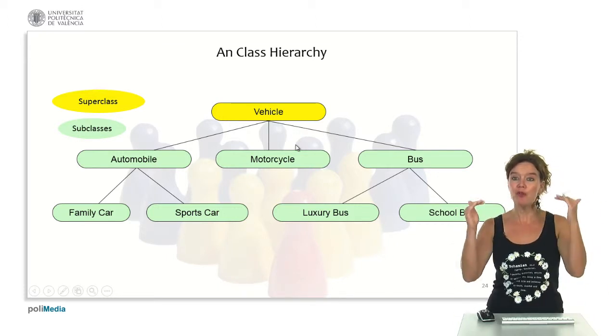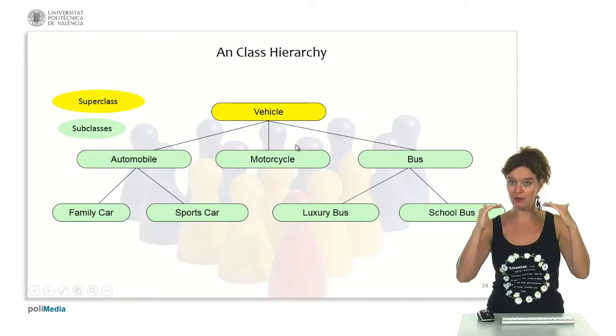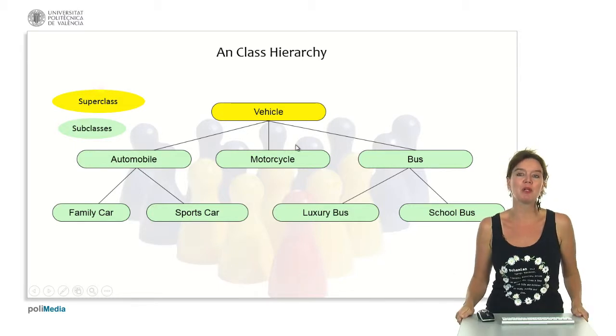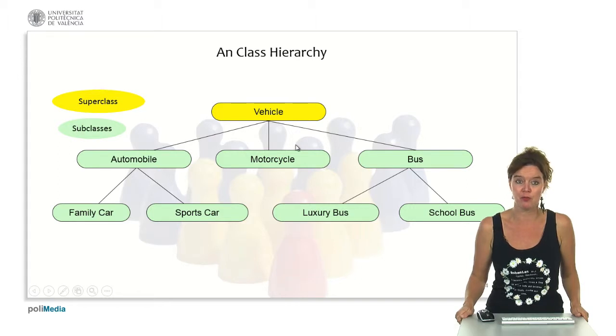But we can go further. We can create very big hierarchies. For example, an automobile can also have different shapes and forms.